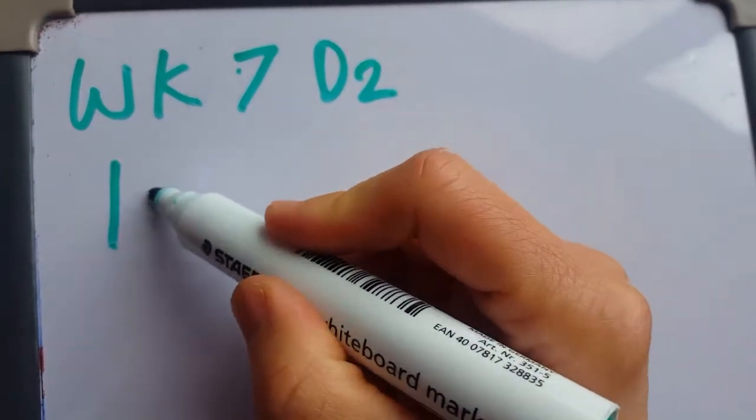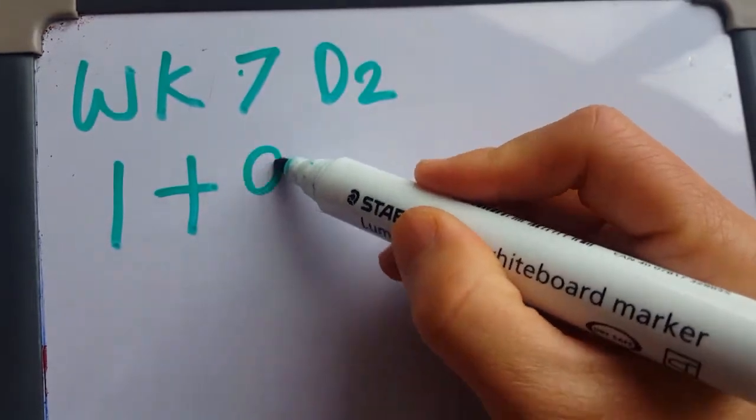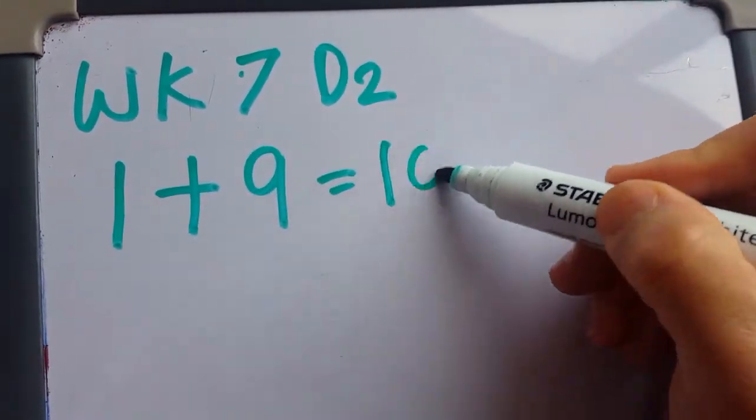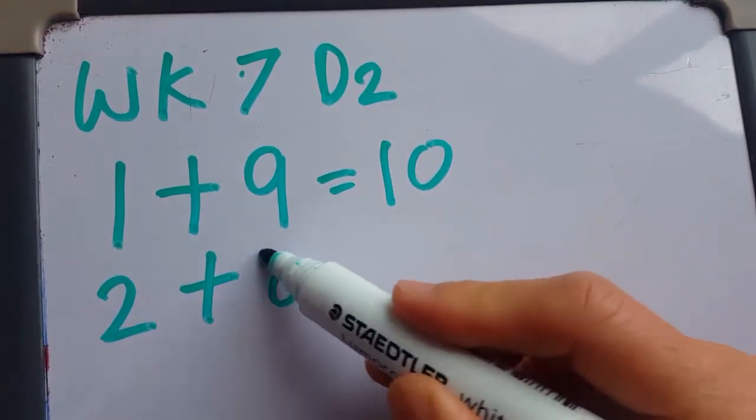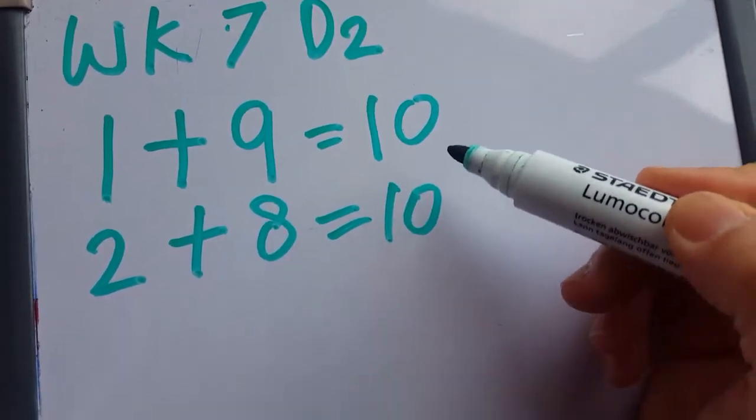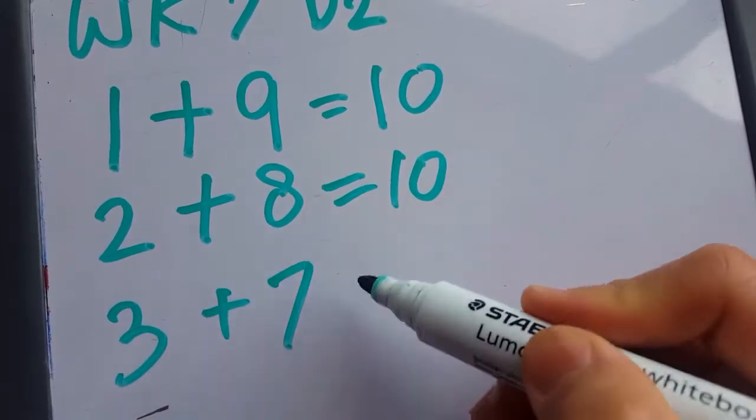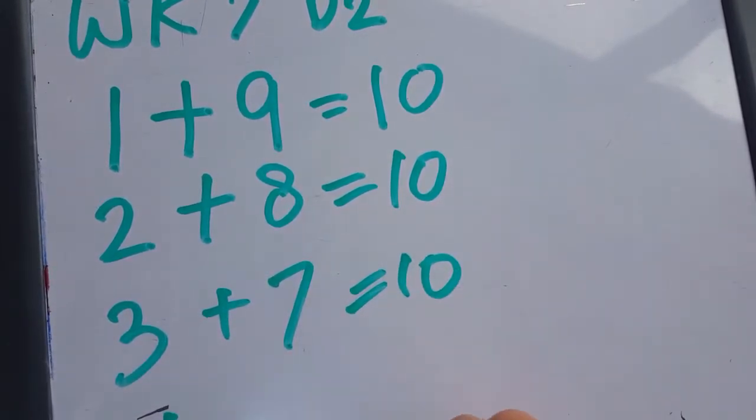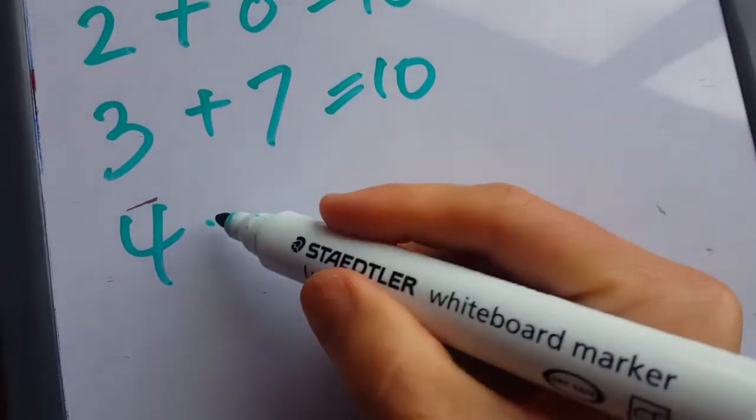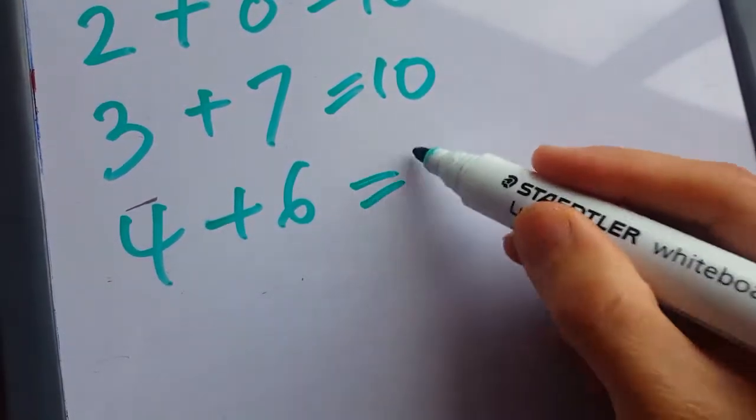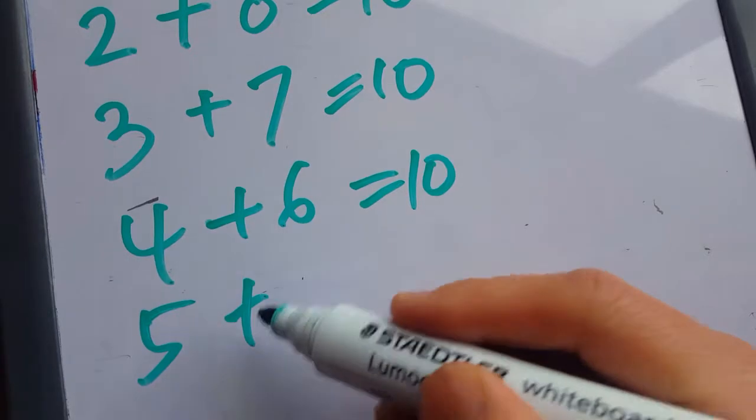First of all, encourage children to participate in what makes 10. 1 and 9, start with 1 and 9 makes 10. And what else? What if you start with 2, what would that be? Ask them to contribute. And then 3 and 7, 4 and 6, and then 5 and 5.